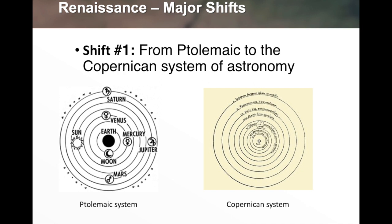In the Copernican system, the small circle with a dot in the center is the Sun, and the Earth spins around the Sun along with the other planets. The Copernican model also found that planetary orbits are not all on one plane, unlike the Ptolemaic system where everything was on a single plane spinning around the Earth. This is a significant shift.